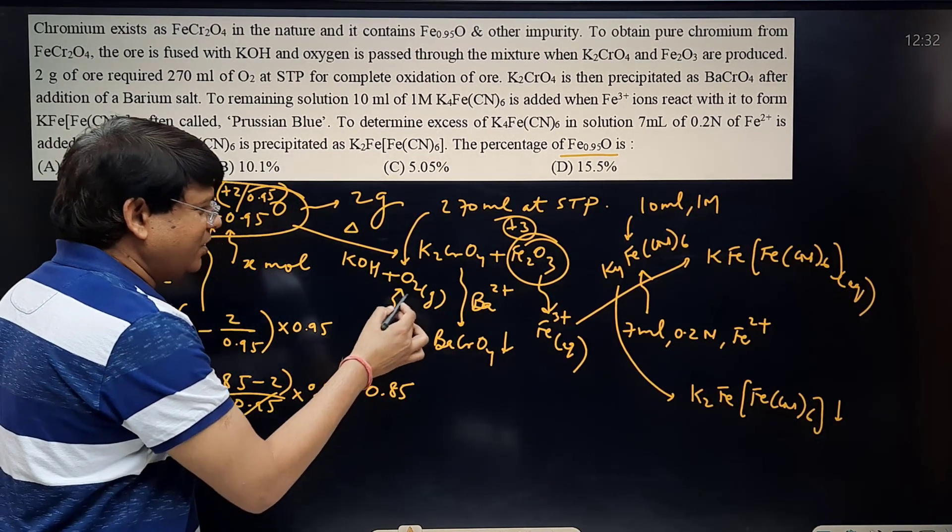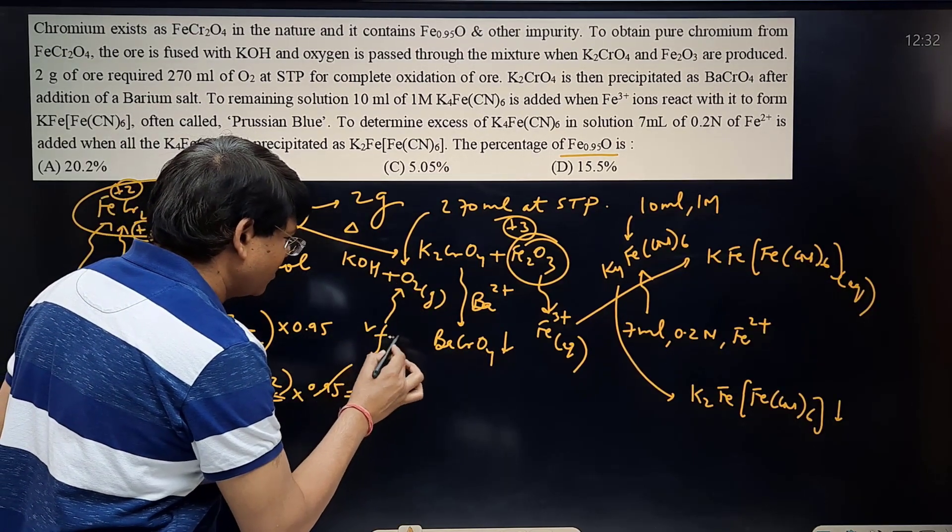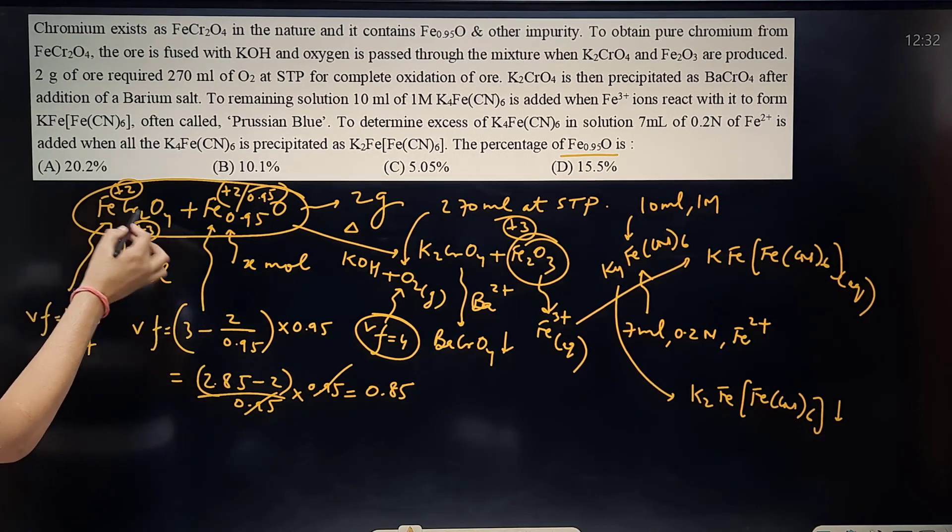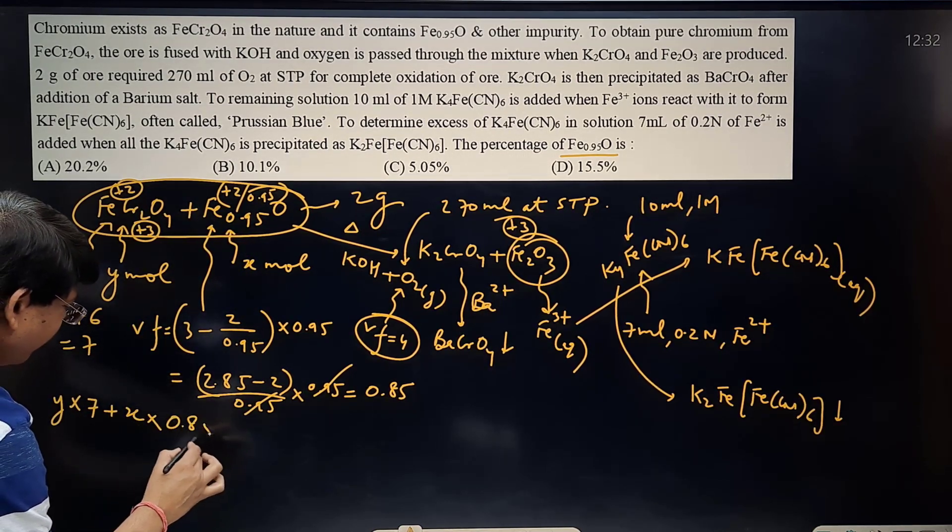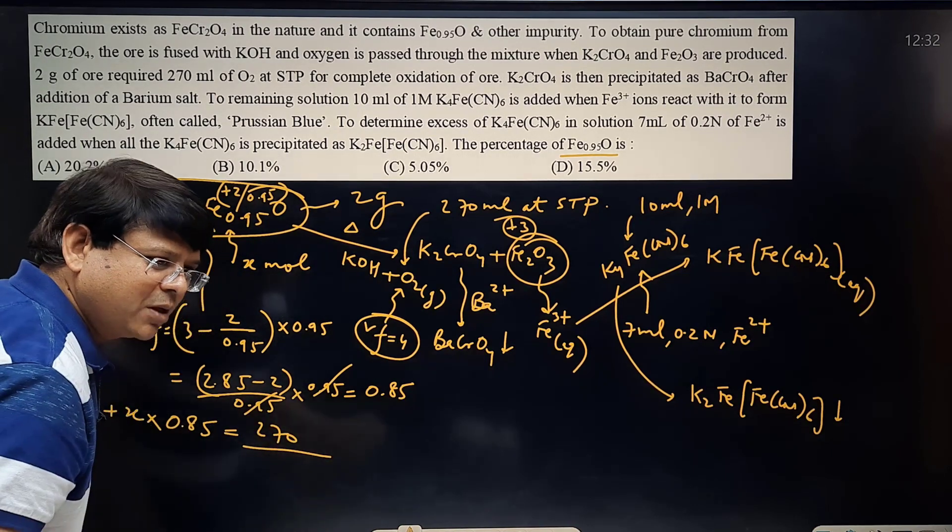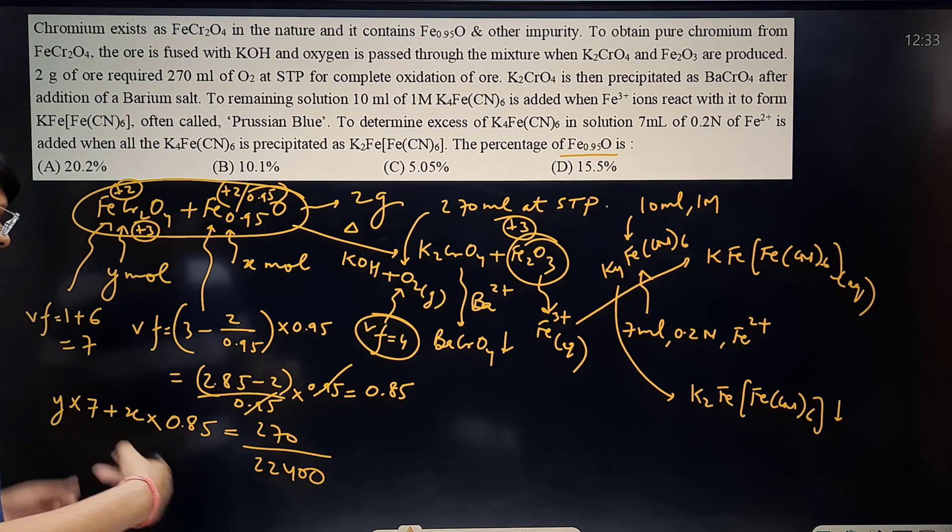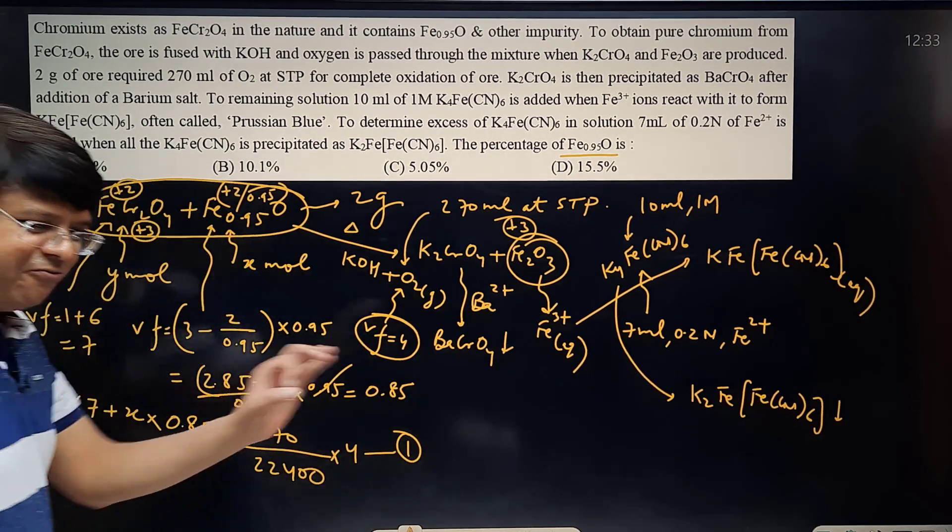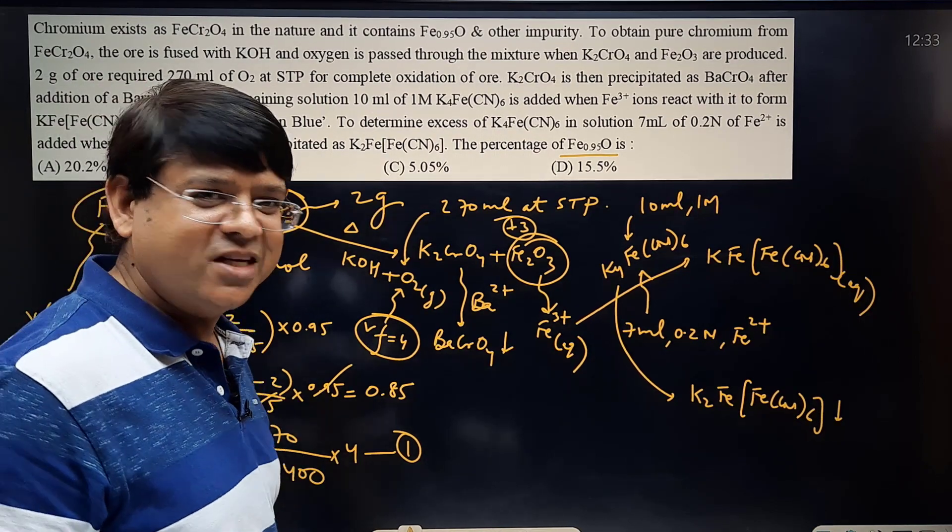What is the valency factor of O2? From 0 it has gone to the -2 oxidation state, per oxygen change of 2. And there are 2 oxygens in molecular oxygen, so the valency factor is 4. Most students do this particular mistake, they do not take the valency factor of oxygen to be right. Now law of chemical equivalence you can apply: Y mole into valency factor 7 plus X moles of the non-stoichiometric compound into valency factor 0.85 should be equal to 270 ml converted into number of moles 270/22400 into valency factor 4. This is equation number 1.